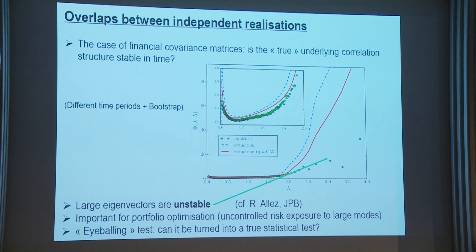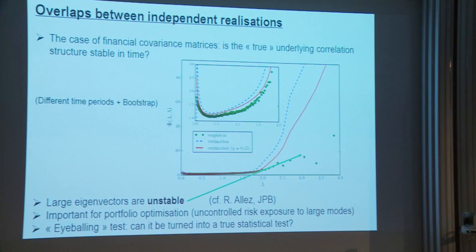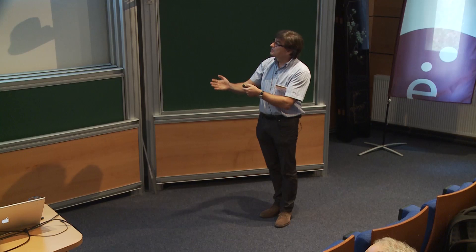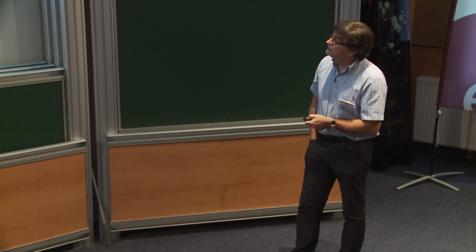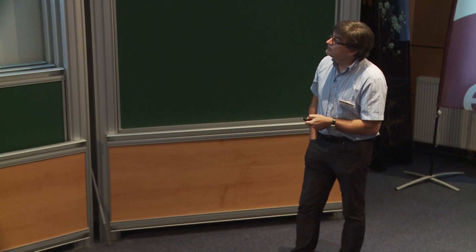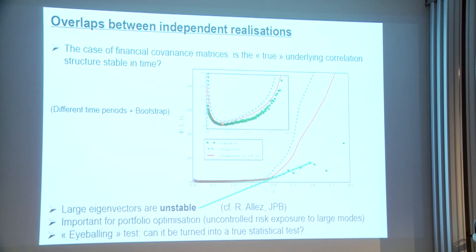This instability of large eigenvectors is extremely important for portfolio optimization. These large eigenvalues correspond to the most risky portfolios — directions in asset space with highest risk. If you think you're neutral in the direction of largest risk but those risk directions shift over time, you're exposed to unknown risk not in your risk model. Currently this is an eyeballing test; it would be valuable to turn it into a proper statistical test.